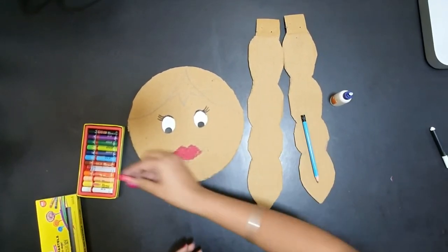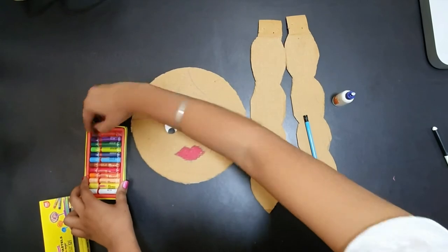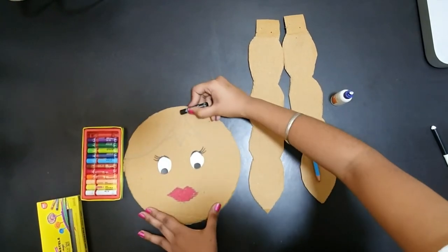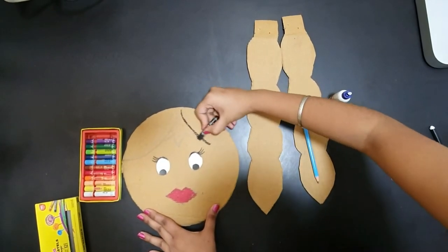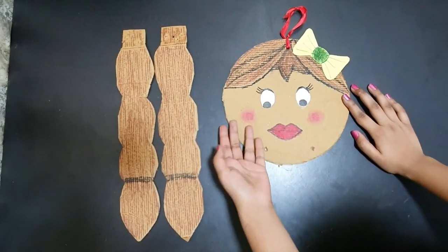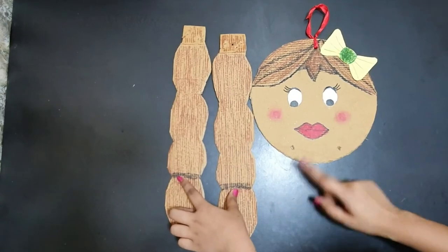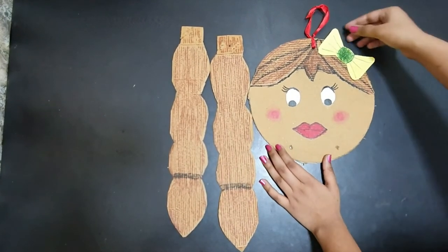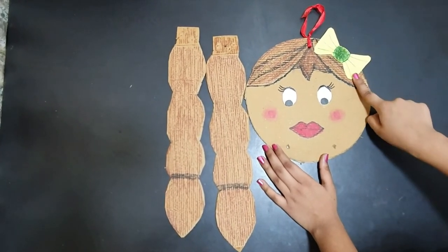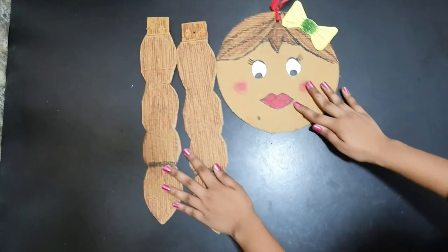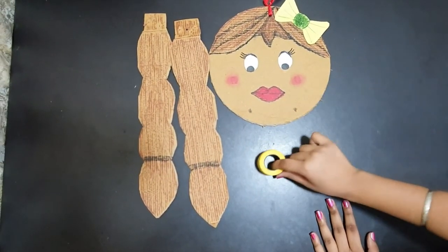Just like this. Now we will color the hair. Now you can see that my coloring has been completed. I have colored it and drawn details with a sheet. Now we will make our hairband hanger. Here we have a ribbon.